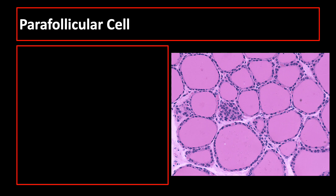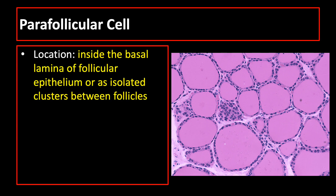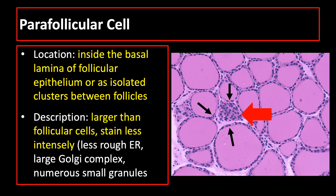Parafollicular cells are found inside the basal lamina of follicular epithelium or as isolated clusters between follicles. In the image, these are the follicles and in between are the parafollicular cells. Parafollicular cells are larger than follicular cells and stain less intensely.